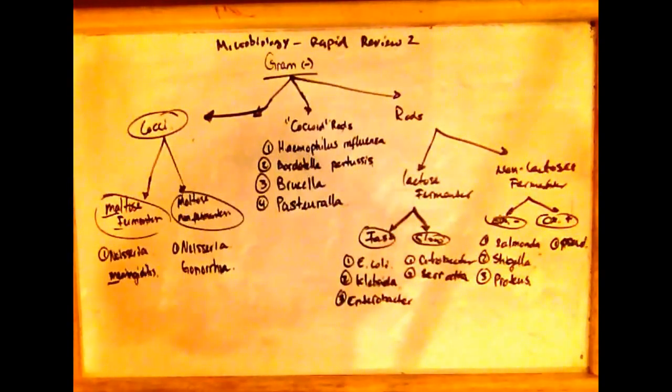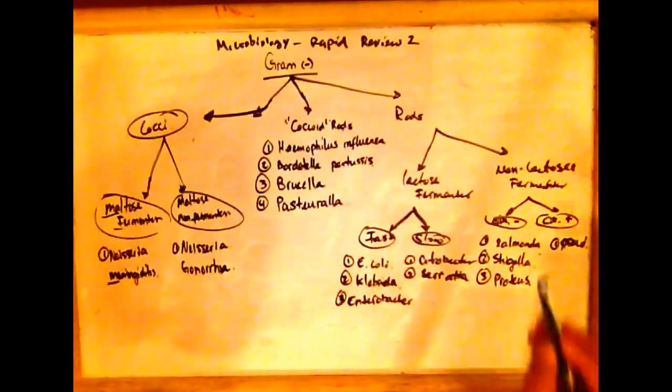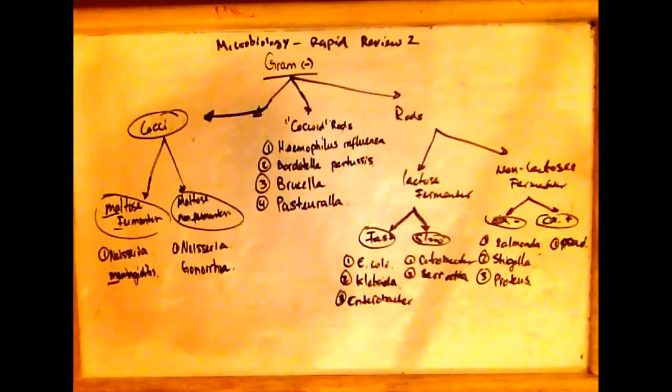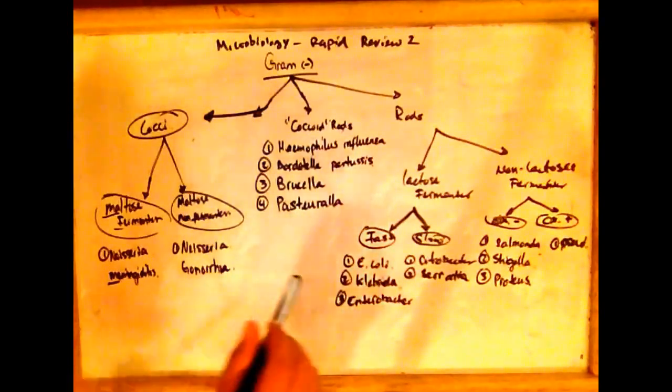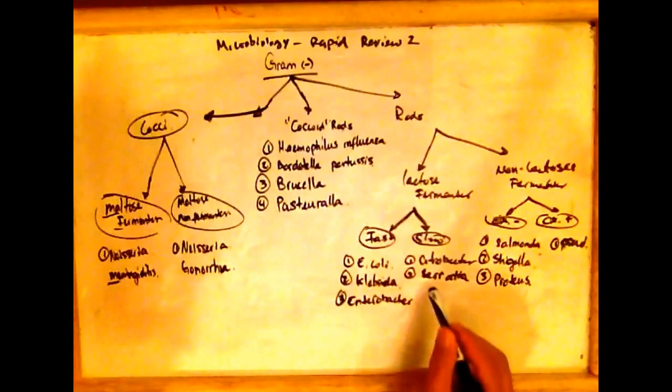Rods can be divided into those that are lactose fermenters and those that are non-lactose fermenters. And for those that are lactose fermenters, we can divide it even further as to those that are fast and those that are slow. The fast lactose fermenters are E. coli, Klebsiella, and Enterobacter. And those that are slow are Citrobacter and Serratia.